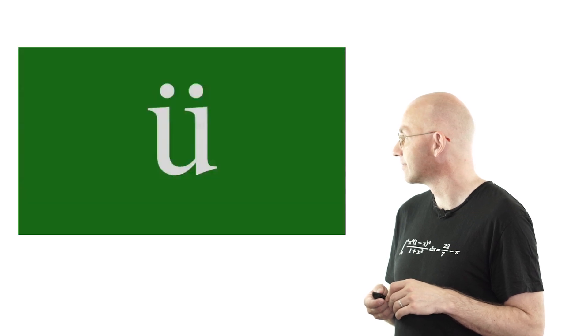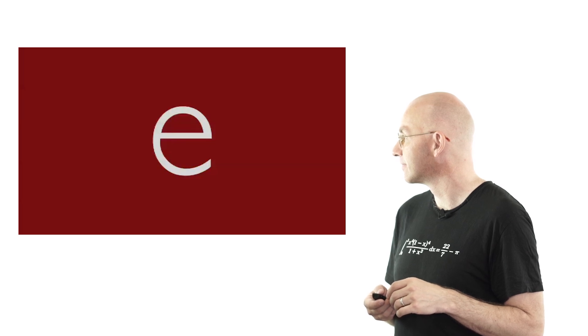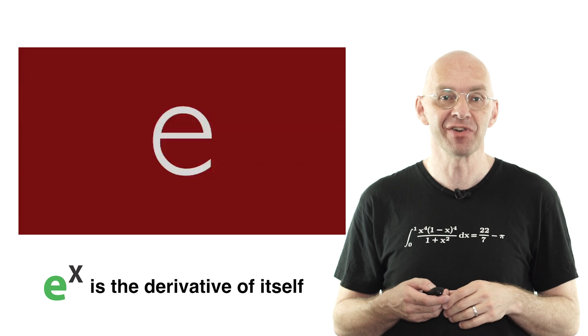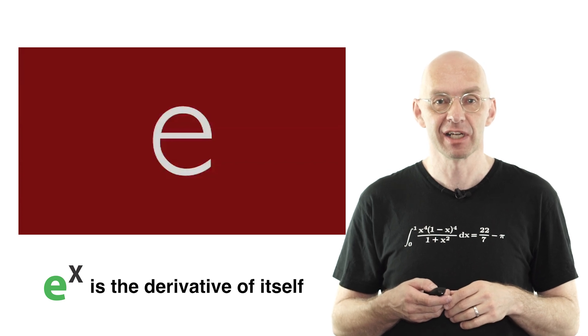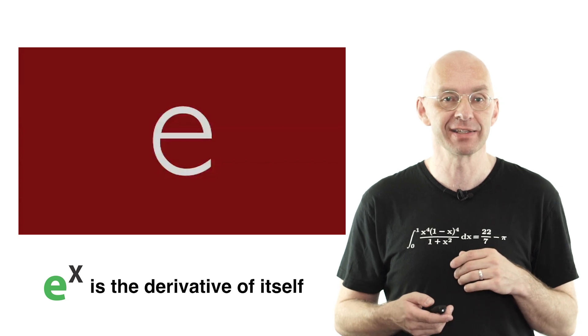Tonight's Simpsons episode was brought to you by the symbol umlaut and the number e, not the letter e, but the number whose exponential function is the derivative of itself. The exponential function is the derivative of itself. Now, before I deal with this, congratulations to Homer and you for making it this far. For this last part of the video, I'll assume that you do know a little bit of calculus.